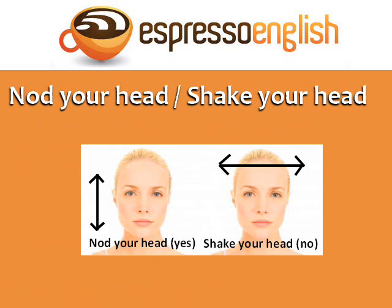Nod your head. Shake your head. When you nod your head, you move your head up and down. This means yes, or I agree, or I approve. When you shake your head, you move your head from side to side. This means no, or I disagree, or disapprove.